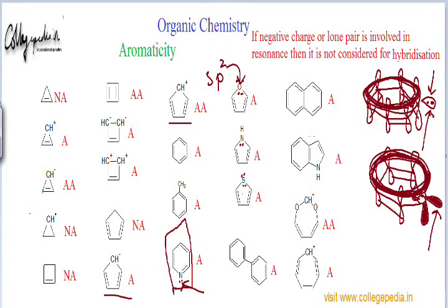We have done enough problems on aromaticity. Now things should be very clear on how to look for aromaticity. In nutshell: the first condition is planarity. If the molecule is planar, then only it is eligible to be assessed for aromaticity or anti-aromaticity. If the molecule is not planar, it is straightaway non-aromatic. If the molecule is planar, we check Hückel's rule — if it has 4n+2 pi electrons, the molecule is aromatic. The molecule must be planar and have 4n+2 pi electrons to be aromatic.